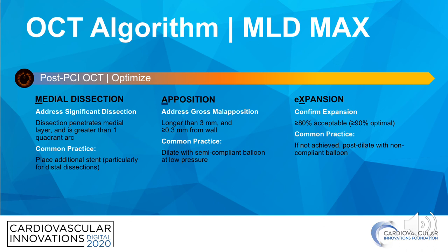OCT software has automatic stent malapposition detection. Most malapposition does not need to be treated. Typically, if it's greater than three millimeters and greater than 0.3 millimeters from the wall, it may require further treatment, which can usually be addressed with a semi-compliant balloon at low pressure.